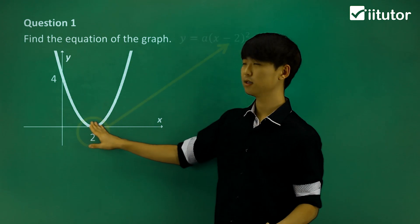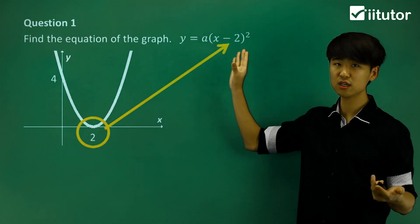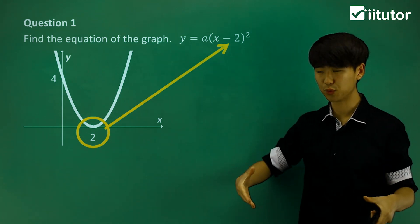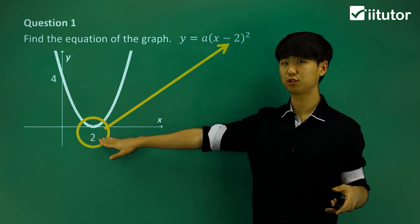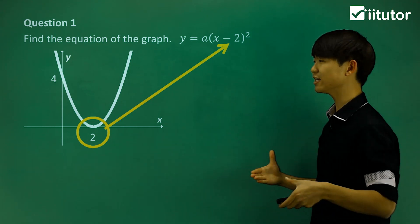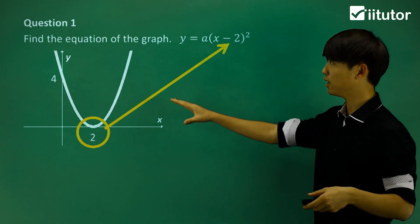Like I said, there is a root at x is equal to 2. So when I write it into my equation, y is equal to a, my factor is x minus 2, because that's the intercept. However, it's a double root at x is equal to 2, so I'm going to write (x minus 2) squared. So that's my equation of this parabola.